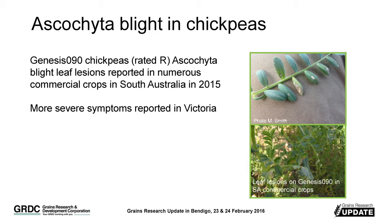With chickpeas, we're looking at a bit of a change in Genesis 90. Genesis 90 is a resistant variety that came out a few years ago and it's quite a popular, widely grown variety. What we're seeing is incremental changes in Ascochyta in commercial crops as well as in research trials, with a greater incidence of leaf lesions and now even an increased incidence of stem lesions in Genesis 90.